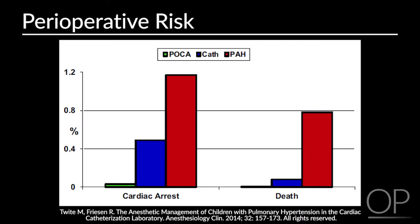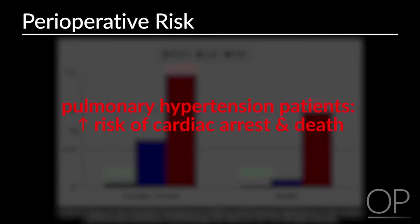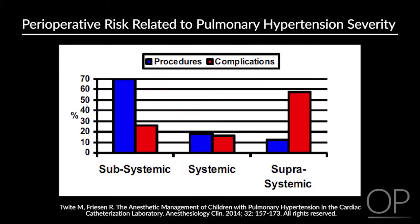This graph depicts three different studies. The small green bar shows the pediatric perioperative cardiac arrest registry, a study involving all patients regardless of diagnosis or surgery. The incidence of cardiac arrest was very small at 0.014%, and the risk of death was 0.0036%. The red bar indicates a study of patients with pulmonary arterial hypertension who had general anesthesia for cardiac cath procedures and non-cardiac surgery. Their incidence of cardiac arrest was 1.17%, and death was 0.78%, significantly higher than the general population.